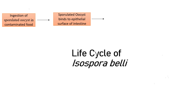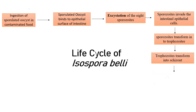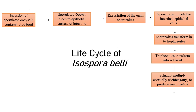The oocyst binds to the epithelial surface via surface membranes and undergoes excystation, whereby the cyst walls and sporocysts rupture. Rupturing of the sporocysts releases the sporozoites, which invade the intestinal epithelial cells. Upon invasion, the sporozoites transform into trophozoites, which undergo multiple multiplication and transform into schizonts. The schizonts undergo asexual reproduction known as schizogony, producing merozoites. The merozoites are released into the intestinal lumen via rupturing of the infected epithelial cells.